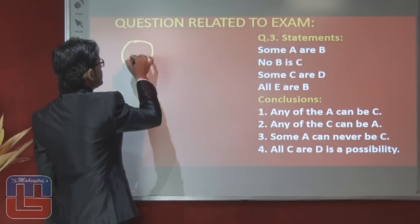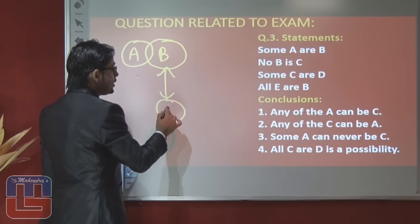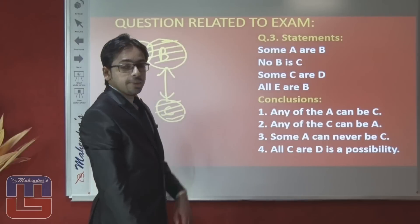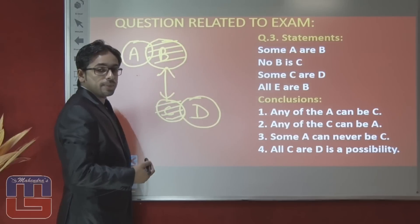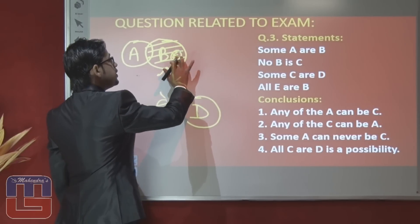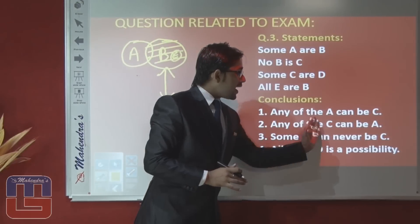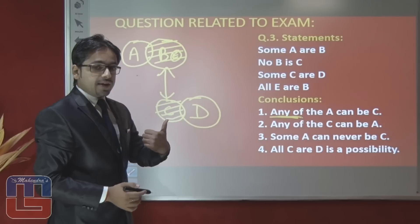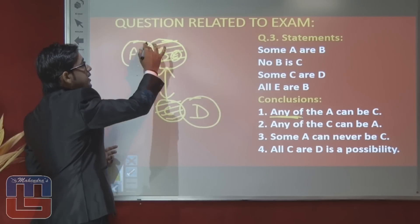Question 3 statements: 'Some A are B,' 'no B is C' (which means all B are not C as well as all C are not B), 'some C are D,' 'all E are B.' Conclusion 1: 'Any of the A can be C' — here 'any' means all. Some A are already B and all B are not C, so some A are definitely not C. How can it be possible that all (any) of the A can be C? Answer is false.